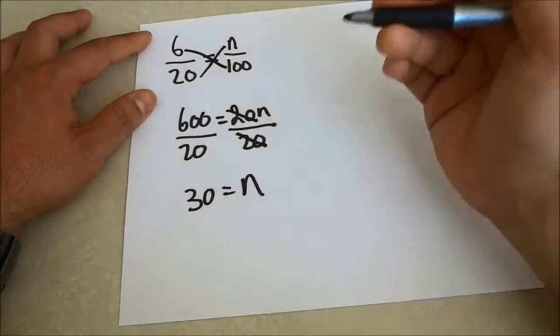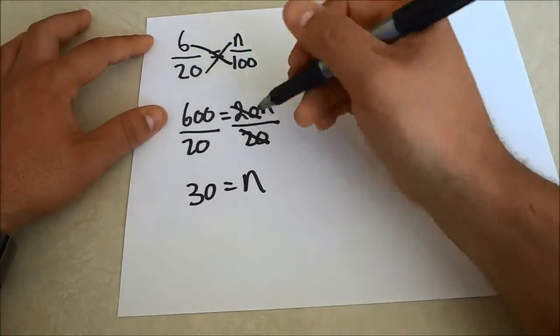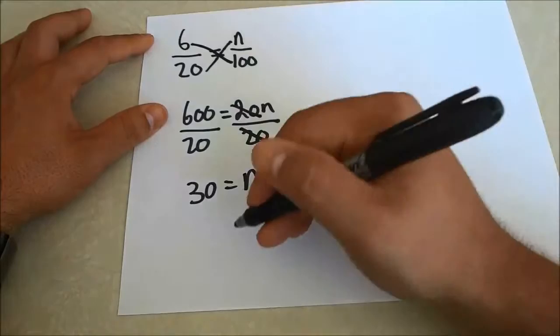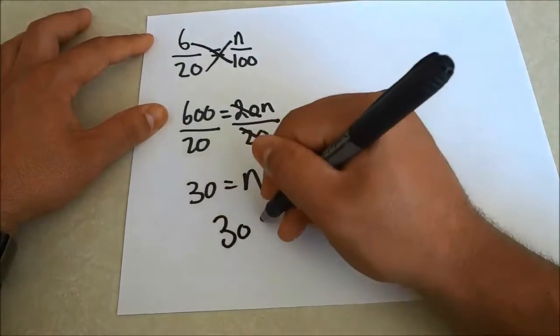So 30 equals n and therefore the percentage of this fraction, the 6 over 20, when we convert it to a percentage is 30 percent.